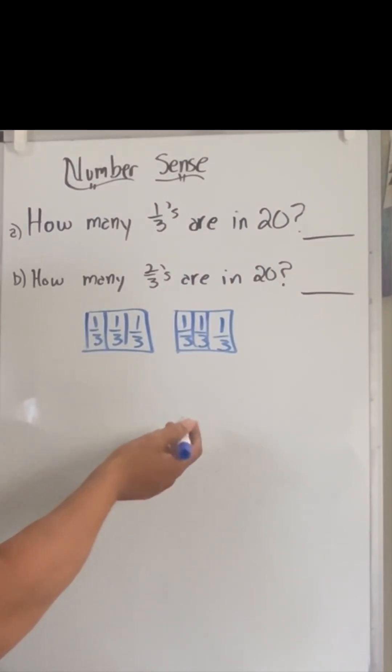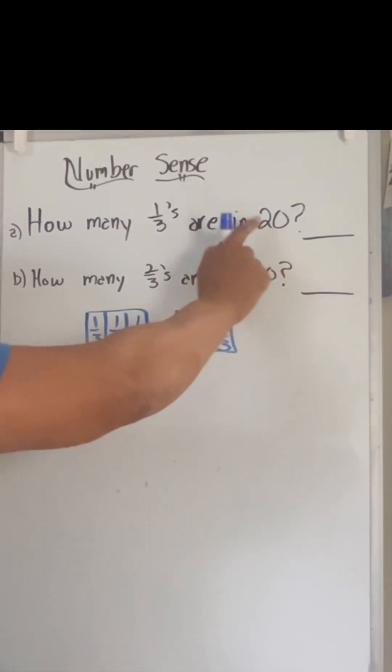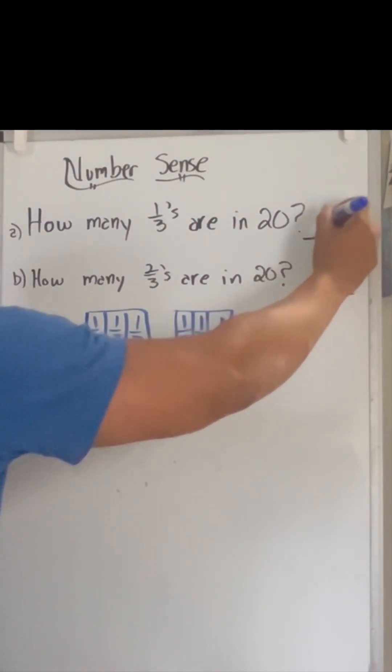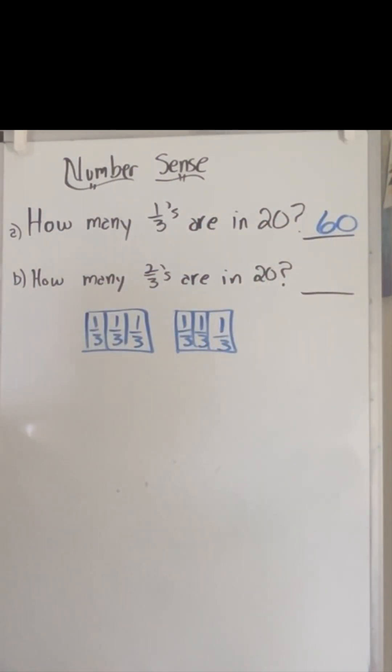All right, so now let's go. How many would be in 10? There'd be 30. So how many would be in 20? Well, 20 times three in this case would be 60. So there's 60 one-thirds in 20.